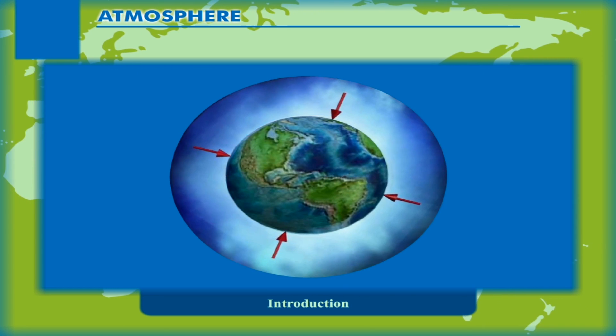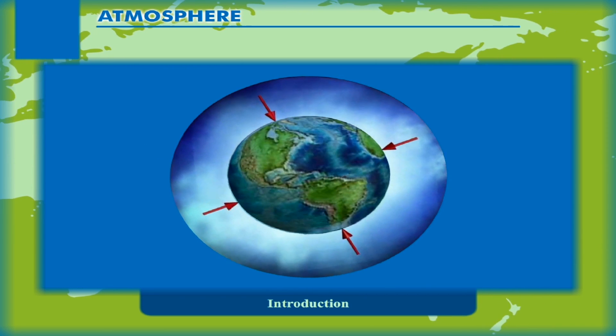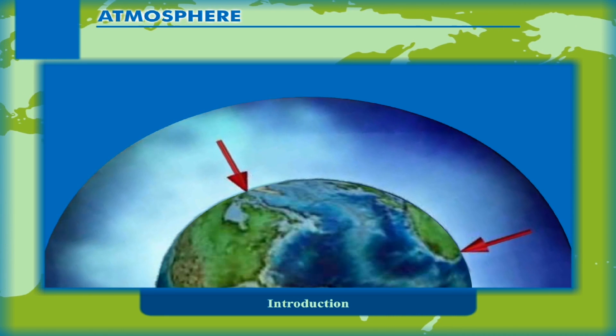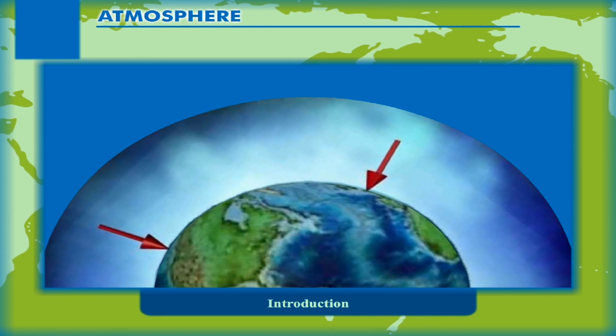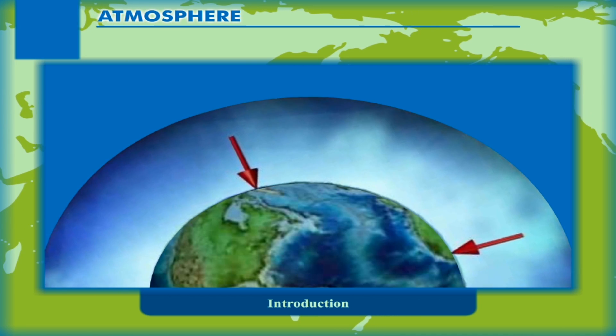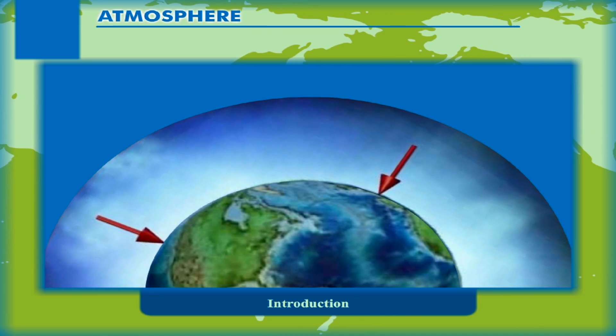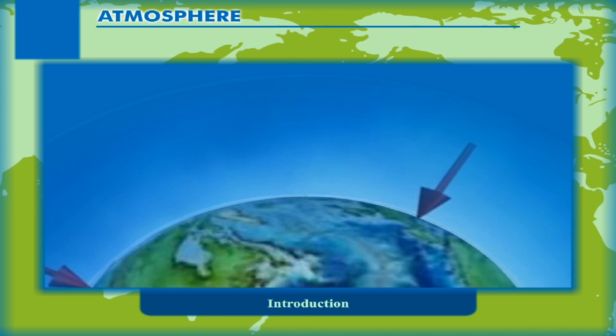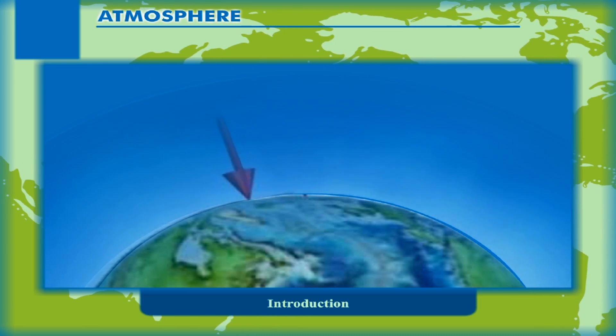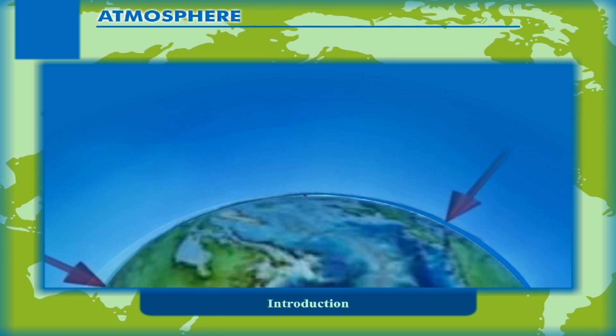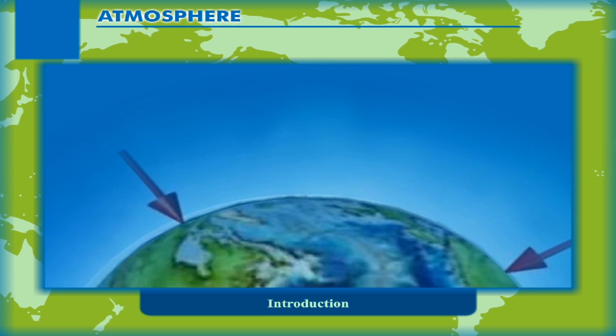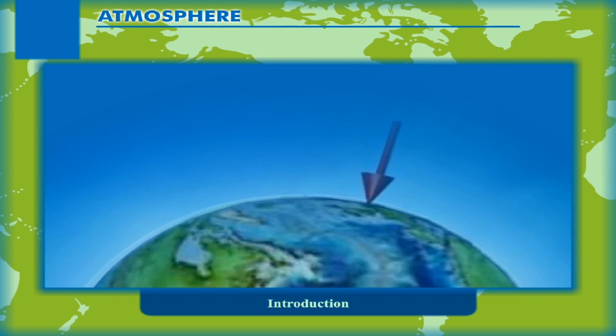The atmosphere stretches above the Earth to a height of more than a thousand kilometers. It is held in place by the Earth's force of gravity. Gravitational forces are stronger near the surface of Earth and therefore the density of air is greater near the surface. As we go higher, the air starts thinning. Ultimately, it merges with space.